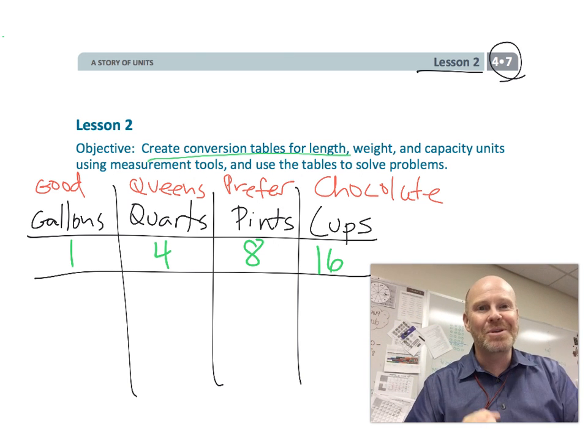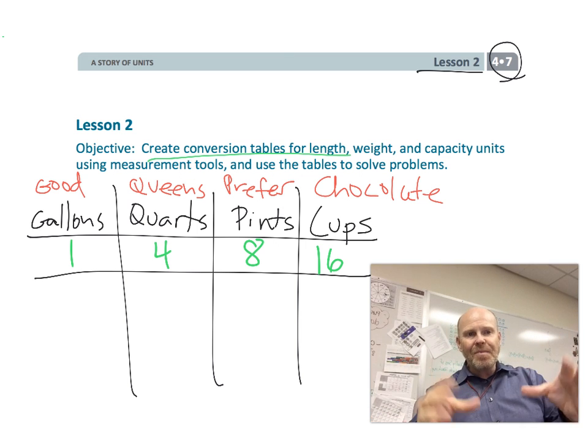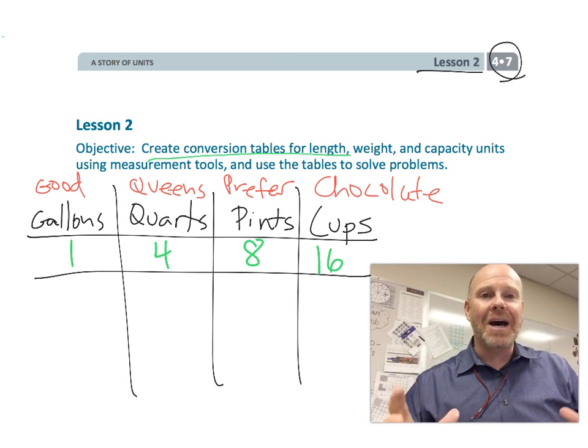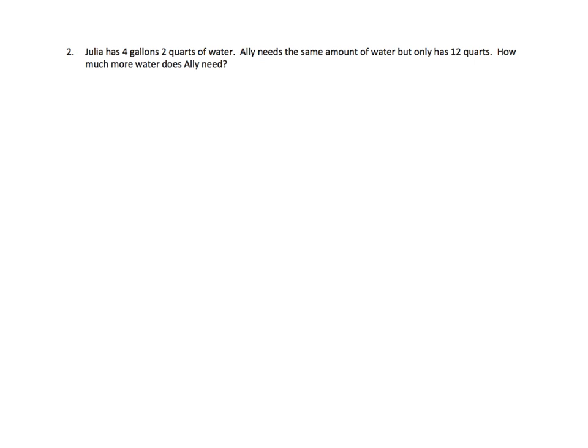Good queens prefer chocolate. One, four, eight, and 16. So before I come up with any more lame mnemonics, let's just get started. All right. So on this one, we've got Julia, and she has four gallons, two quarts. Allie needs the same, but she has 12 quarts. How much more water does Allie need?